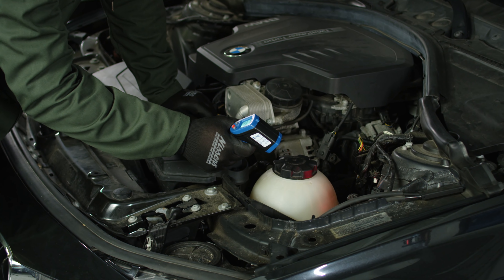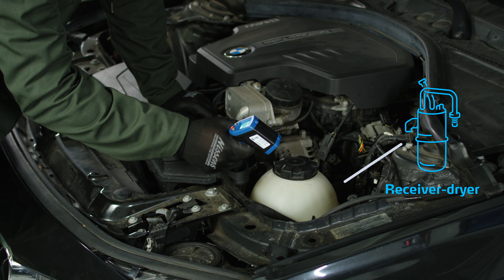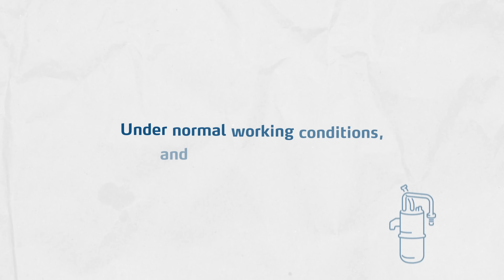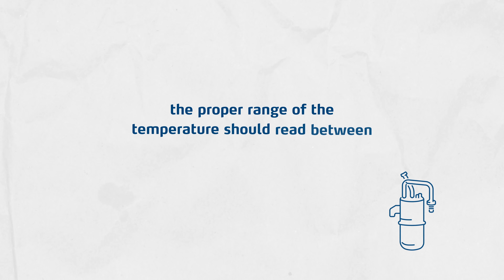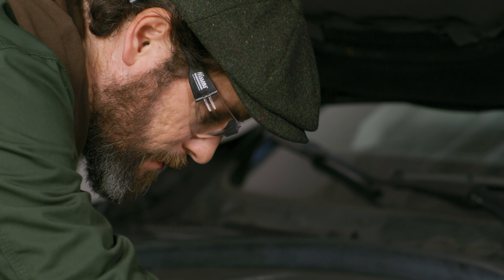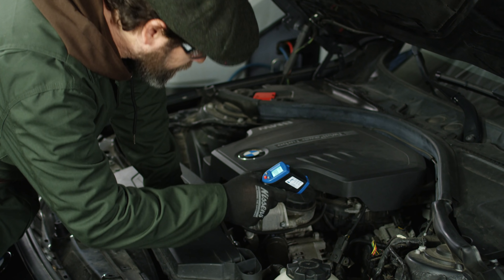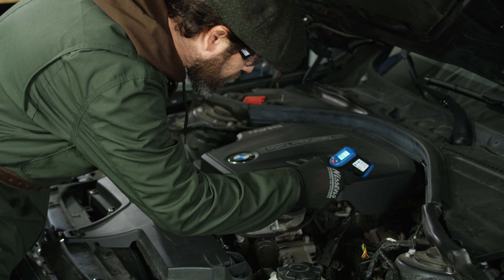The receiver dryer — or the line to the receiver dryer that's between the condenser outlet and the receiver dryer — is a good measurement point. Under normal working conditions and in a healthy system, the proper range of temperature should read between 30 to 50 degrees Celsius or 90 to 120 degrees Fahrenheit. This is actually something you can sense without a thermometer, because you can easily tell the element is too hot if it's above 50 degrees Celsius or 120 degrees Fahrenheit. A temperature that is way too high at this spot can mean many things, but here are the most common.